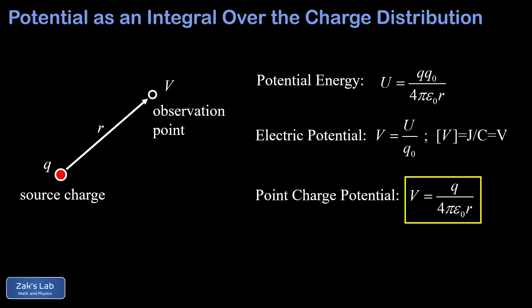Note that we have already implicitly chosen a reference point for this potential, because our potential energy function for point charges uses a reference point of zero when r goes to infinity. The same is true for the electric potential: V for the point charge goes to zero when r grows to infinity.